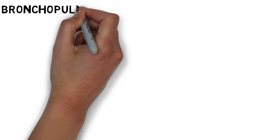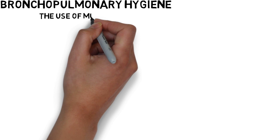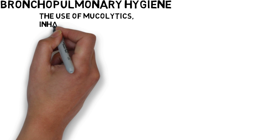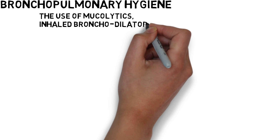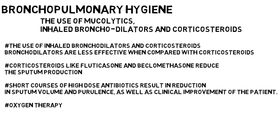Bronchopulmonary hygiene consists of different maneuvers and drugs that aid the patient to remove respiratory secretions, including physical therapy such as postural drainage, chest percussion, forced exhalation and controlled cough, in addition to mucolytic agents, inhaled bronchodilators and corticosteroids. Inhaled bronchodilators are less effective compared with corticosteroids. Corticosteroids like fluticasone and beclomethasone reduce sputum production. Short courses of high-dose antibiotics result in reduction in sputum volume and purulence as well as clinical improvement. Oxygen therapy is also used.